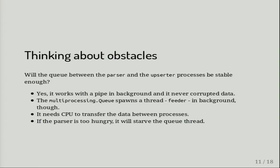Between the parser and the absorber process we have a multiprocessing queue that uses a Unix pipe in the background. That pipe never corrupted data and we never had problems with it. However, there is a problem with data transfer speed: when you insert data into the queue, it spawns a thread which inserts data gradually from its internal buffer into the pipe. If this thread does not have the GIL, data in the buffer is not actually inserted into the pipe, so the connection between the parser and the absorber is broken. There are ways to minimize the damage, which I will discuss in a later slide.